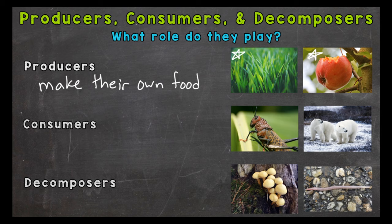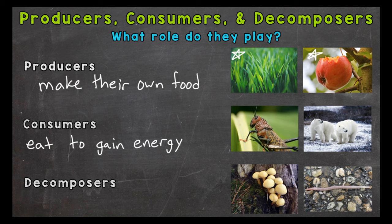Then we move to consumers. Consumers cannot create their own food and energy, so they need to consume or eat in order to gain that energy. There are different types of consumers: herbivores that consume only plants, carnivores that consume only meat, and omnivores which consume both plants and meat. Just know that consumers must consume or eat in order to gain energy — they cannot create their own food like producers do.